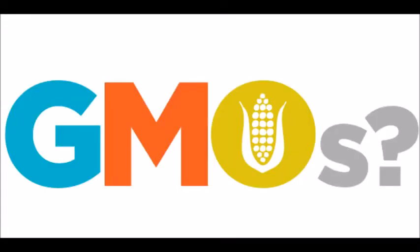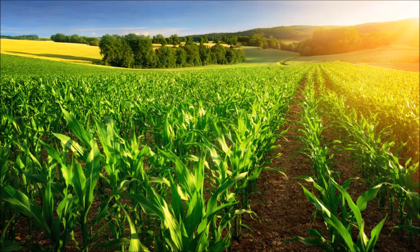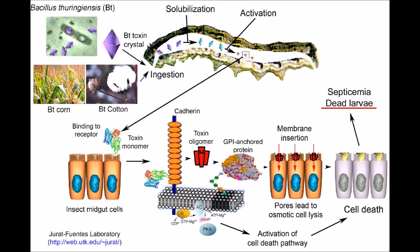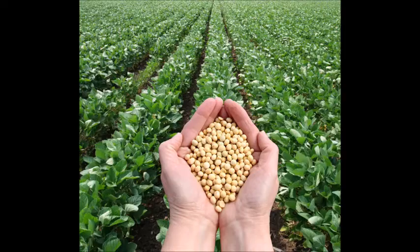But if GMOs are just as nutritious as normal crops, then why use them? The reason is that GMOs allow farmers to grow more crops without fear of insects eating the plants or poisoning the plants with herbicides. Genetically modified corn and cotton contain insecticidal genes from the bacteria Bacillus thuringiensis, and soybeans have been given genes that make them tolerant of the herbicide glyphosate.